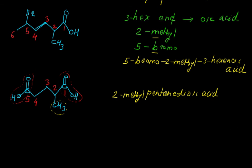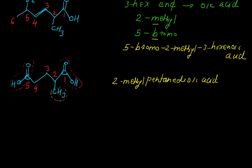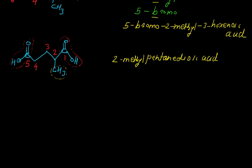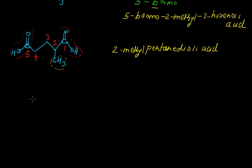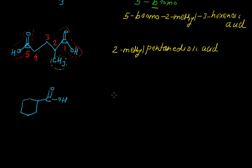Now let us look at another example of a carboxylic acid where a cyclic compound is attached to a carboxyl group. Here, cyclohexane is attached to the COOH group. For such compounds, we write the name of the cyclic compound — cyclohexane — and then end with 'carboxylic acid', giving cyclohexanecarboxylic acid.